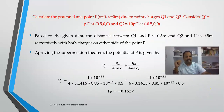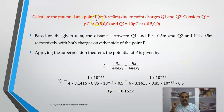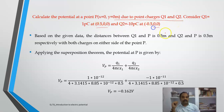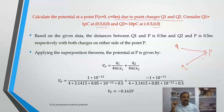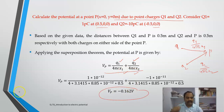Problem 3: Calculate the potential at a point T due to two point charges q1 and q2 at different locations. Using superposition, the potential due to q1 is q1/(4πε x1) and the potential due to q2 is q2/(4πε x2). Adding these two values with the known q1, q2, x1, and x2 distances gives the total potential at T. This is how to calculate electrostatic potentials when multiple point charges are given.